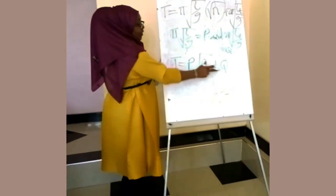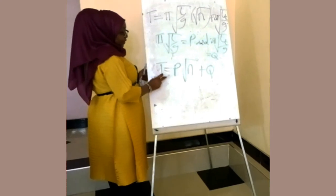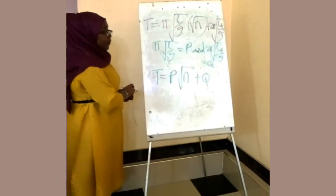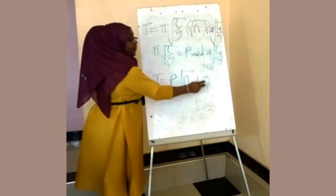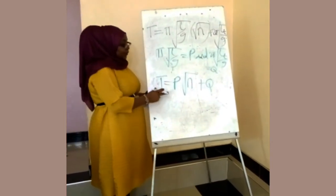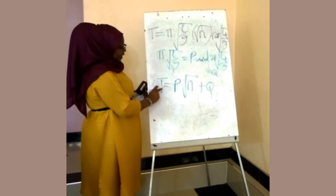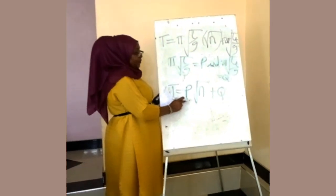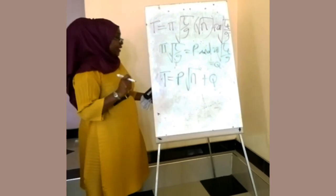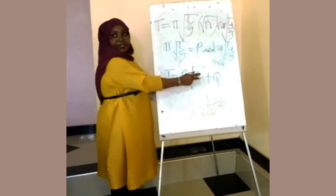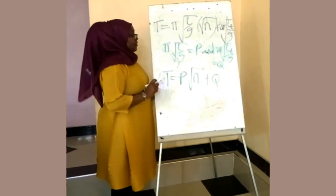So this is how the periodic time T relates to the number of paper clips. The periodic time T is proportional to the square root of the number of paper clips, where P and Q are constants. Comparing with Y = MX + C, this is Y, M is the slope, X is √N, and C is the y-intercept. The graph is a straight line with a y-intercept and a positive slope.